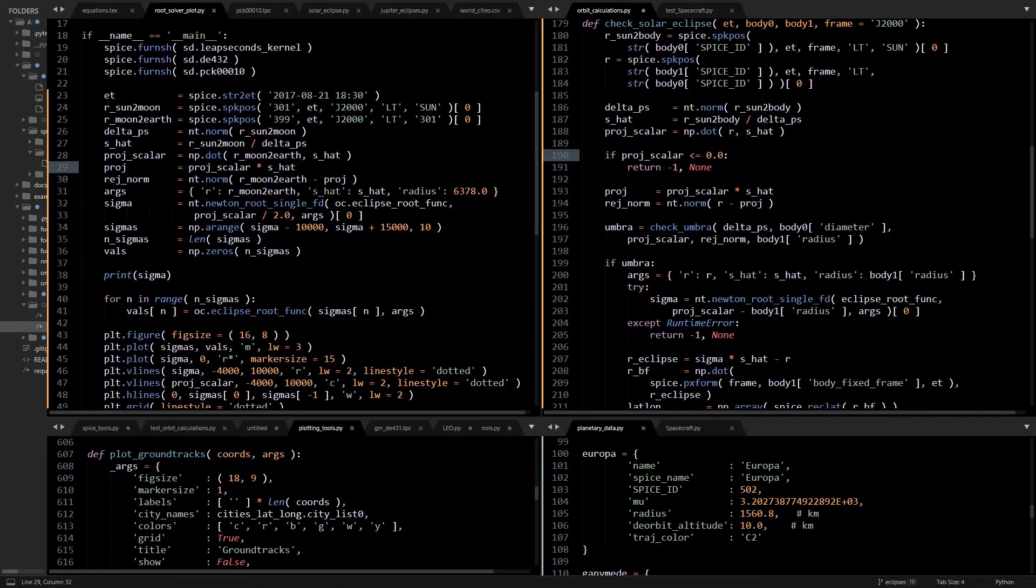In the next video, we'll go over the software, which will include an explanation as to why the root solver isn't in a try except, because in partial eclipse, the edge of the eclipse ray intersects Earth, but not the sun vector. So the check Umbra function would return true, but the solver won't converge because it's using the sun vector. So let me know if you have any questions or comments about this one, and I'll see you in the next video.